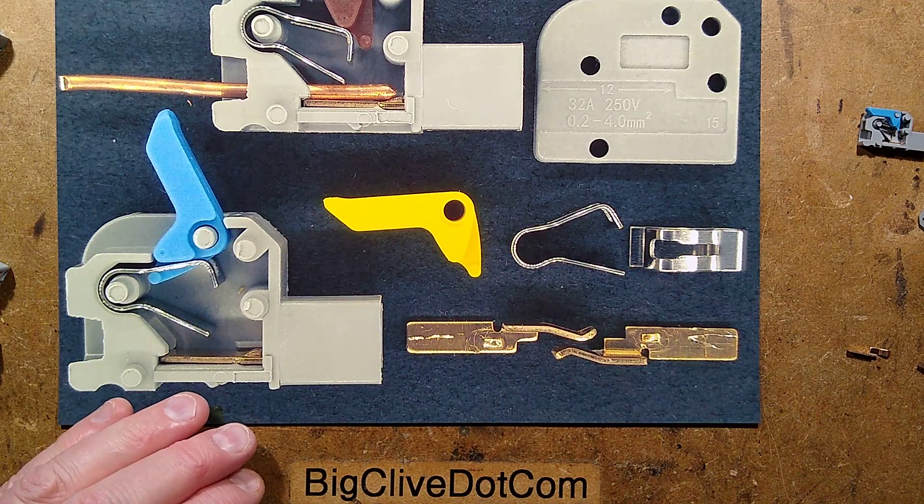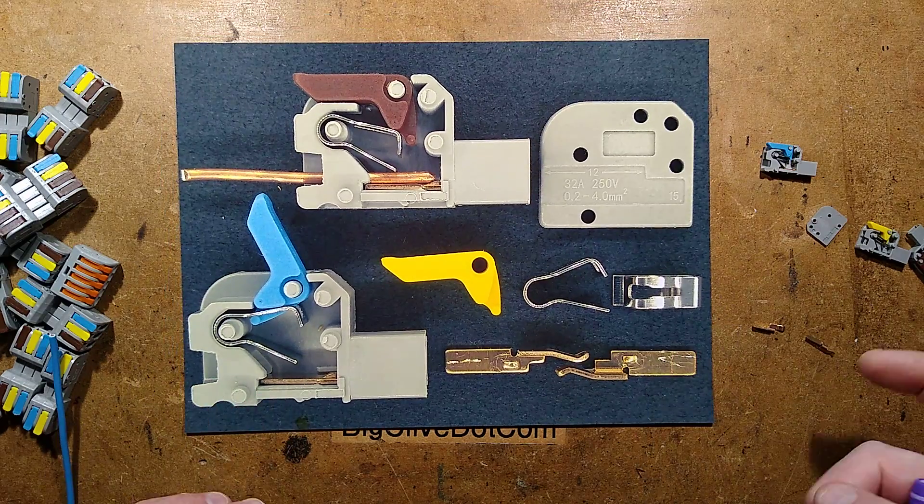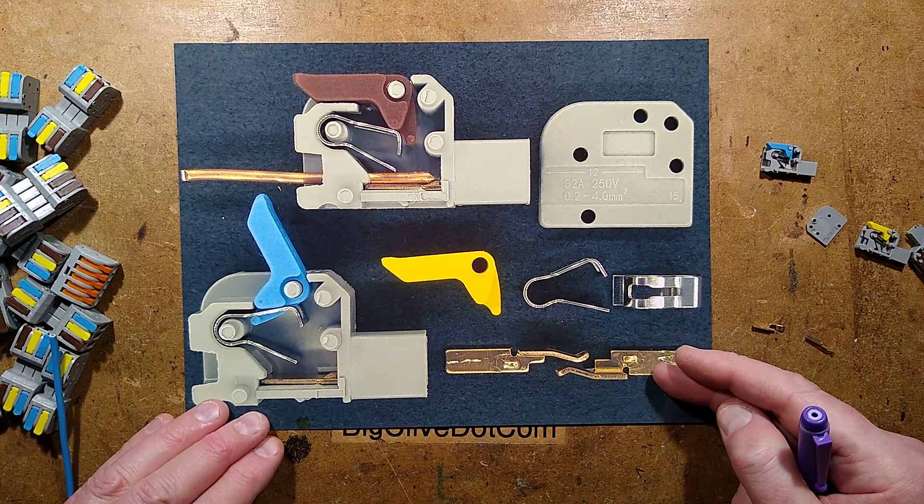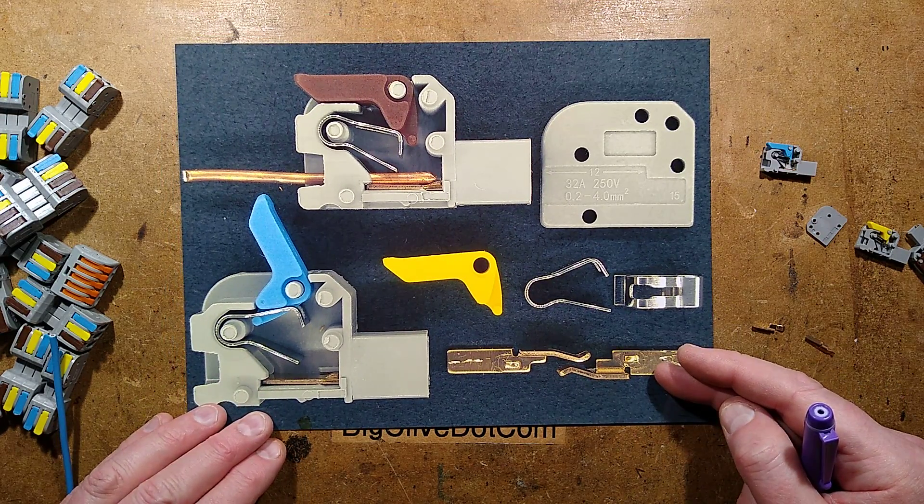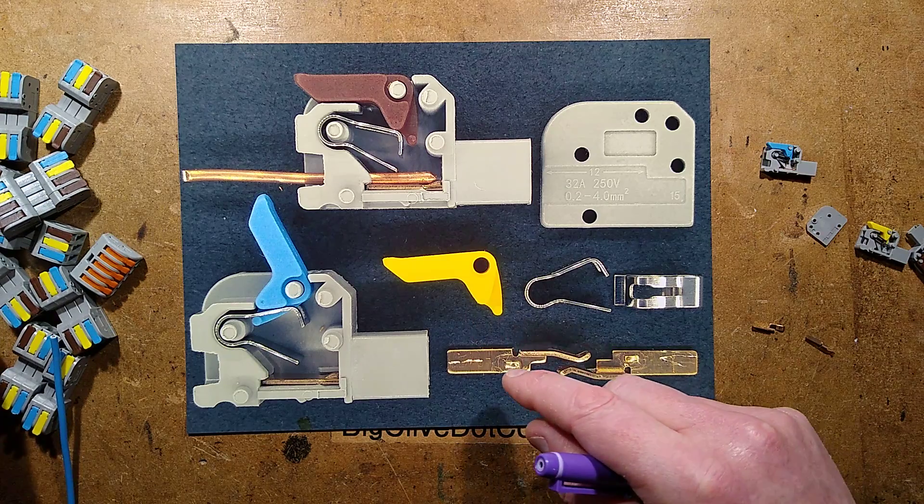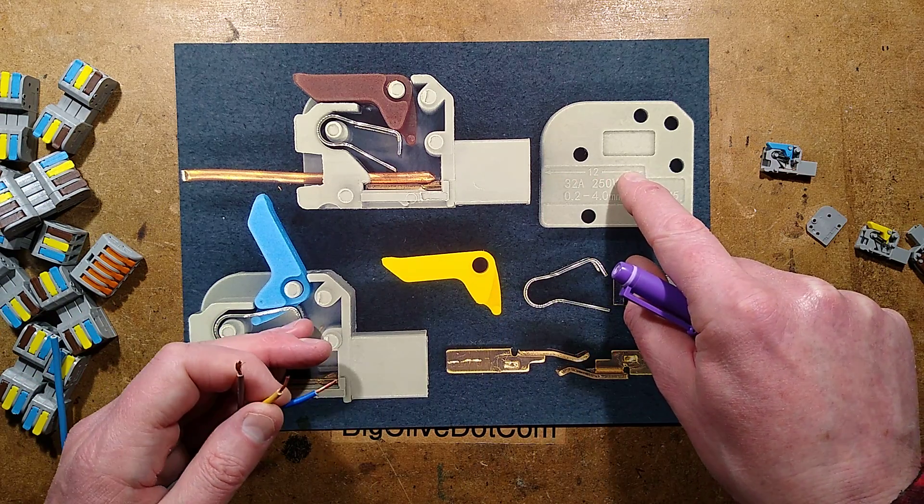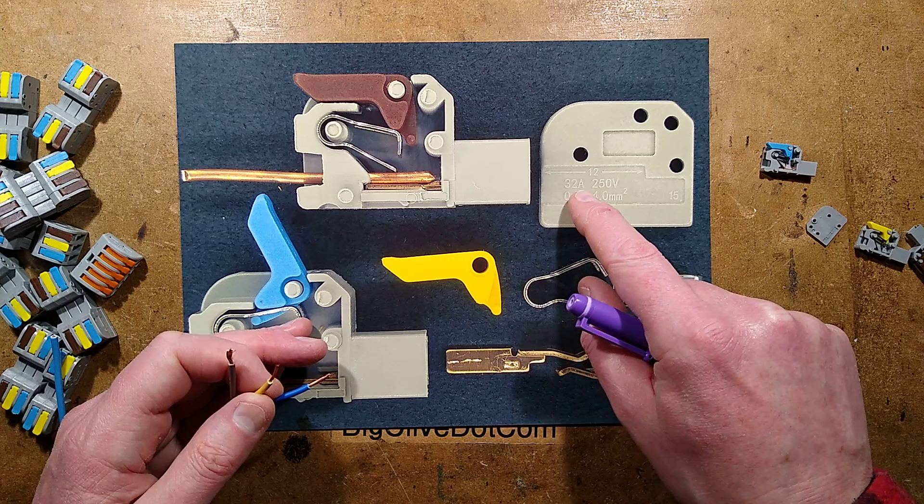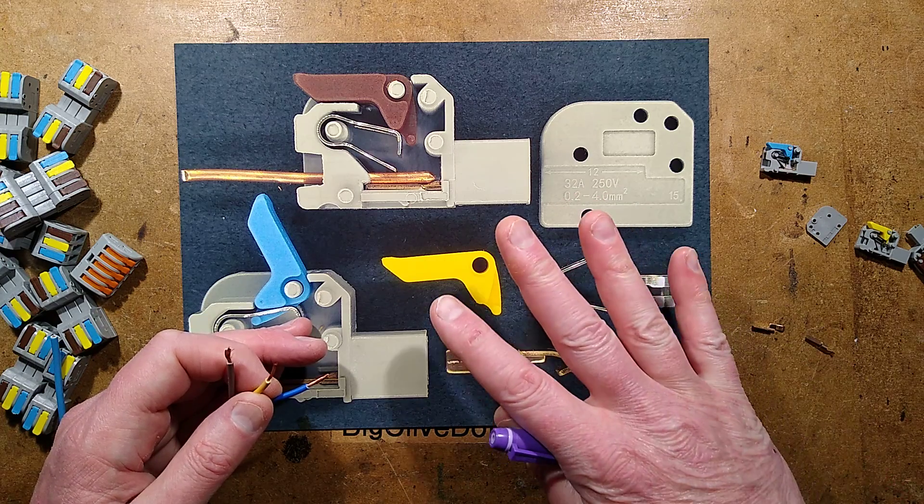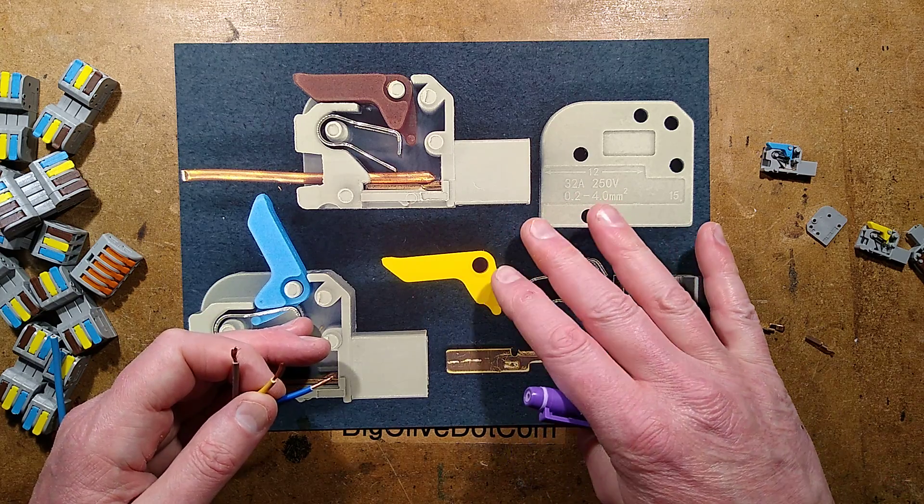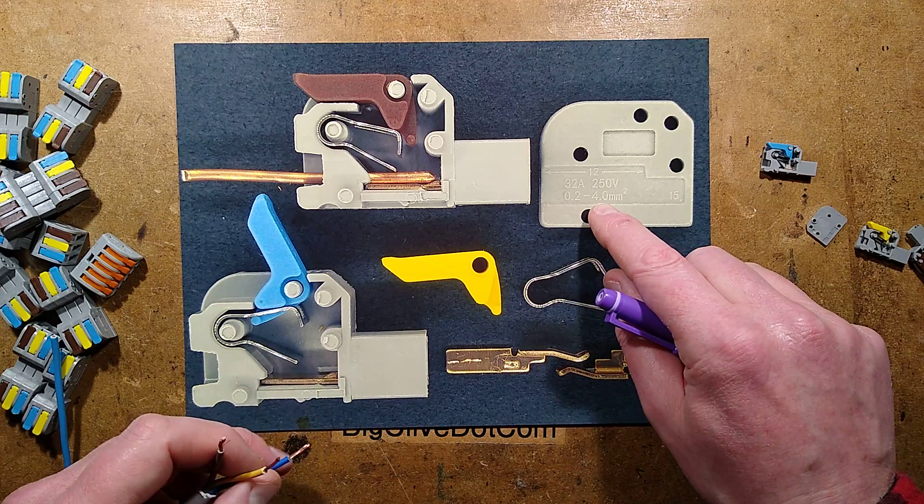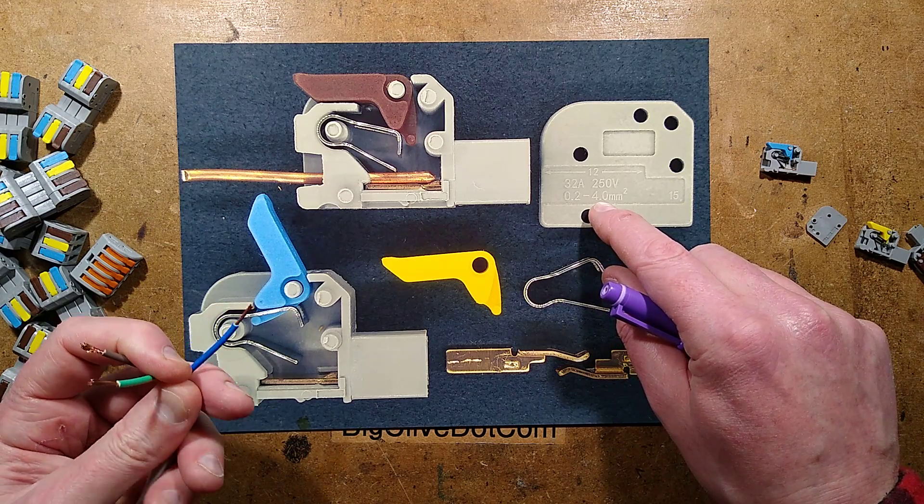Let's zoom out again and take a look at other stuff. When you put the wire in, you have to strip it roughly 12 millimeters. There is a little mark here that says 12. It also says 32 amps at 250 volts. I would not even remotely trust this anywhere near that. It also says it's good for 4 millimeter. I think that would be a tight fit.